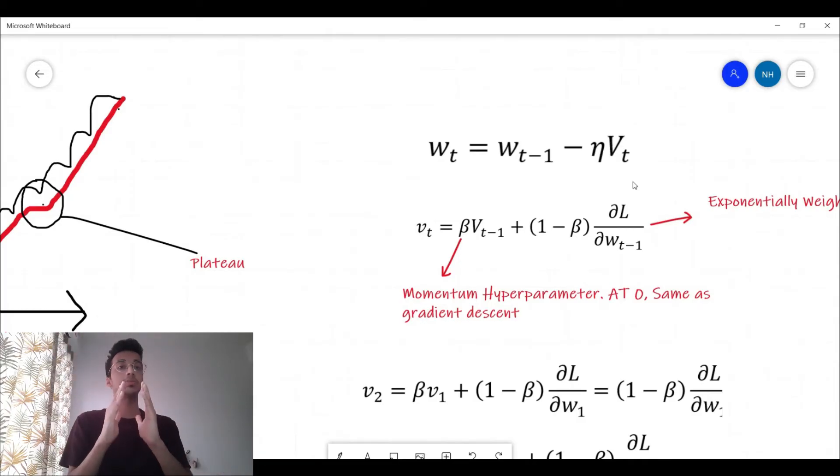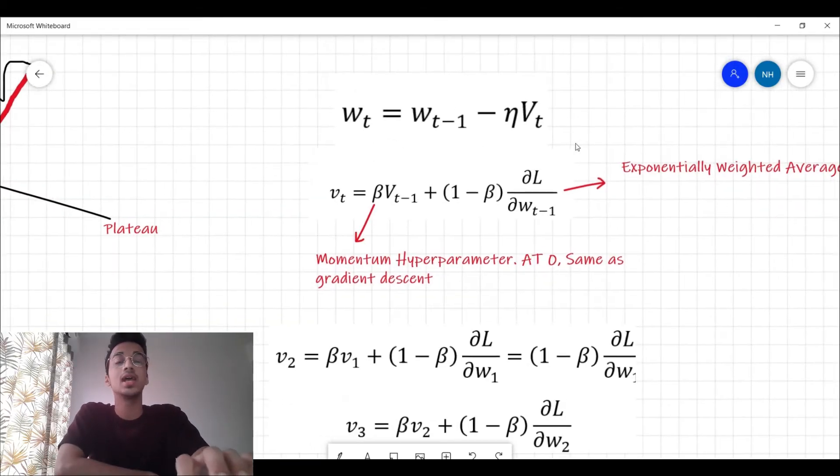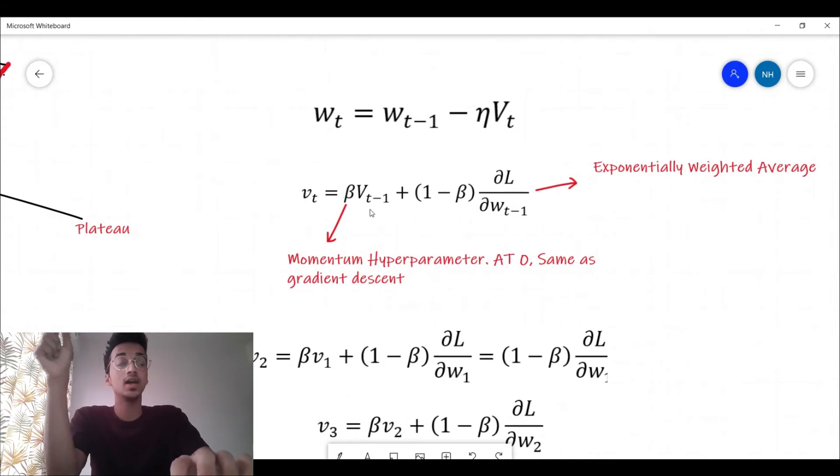v_t has to be calculated as β into v_{t-1} plus (1 - β) into the change of loss with respect to the previous weight ∂L/∂W_{t-1}. This equation is also called the exponentially weighted average, because basically what's happening is that you are not only taking the previous gradient into account, you're taking into account all the previous slopes, all the previous gradients.